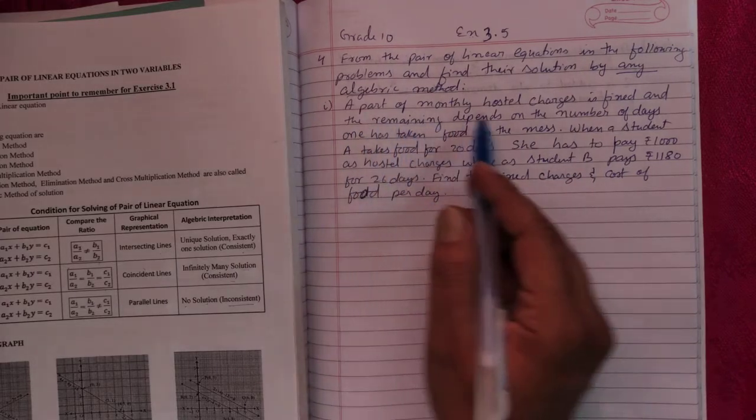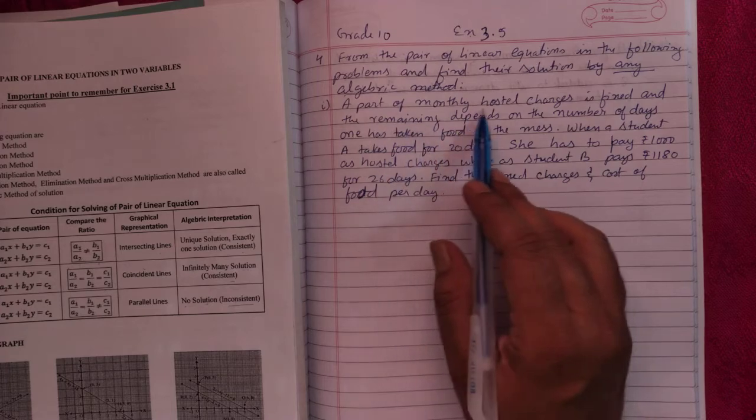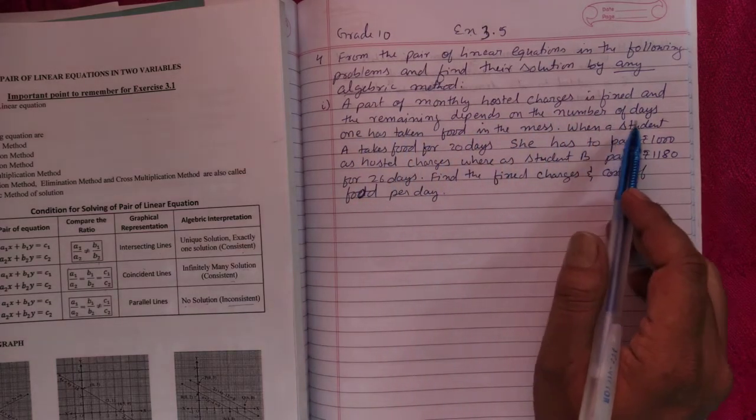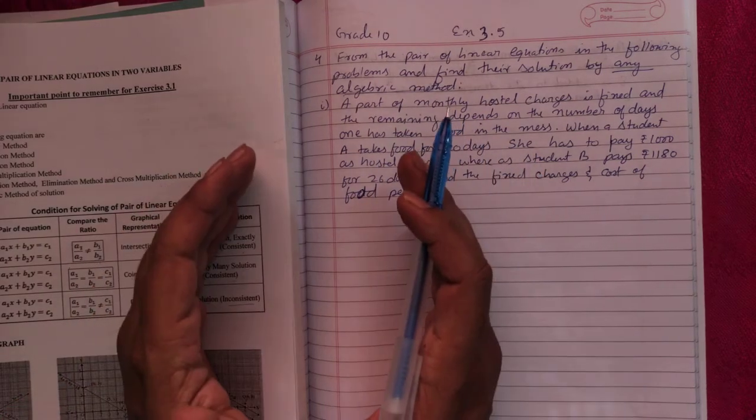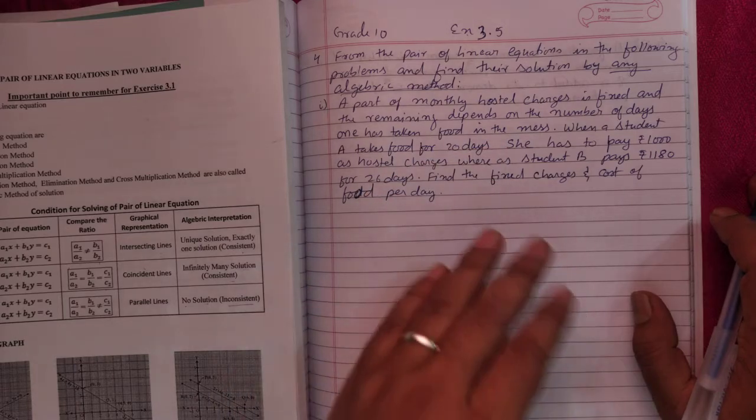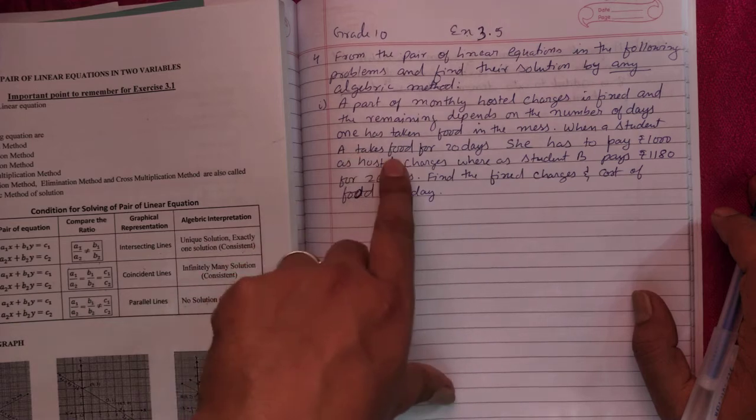A part of monthly hostel charges is fixed and the remaining depends on the number of days. This means there is a fixed hostel charge and the remaining depends on the number of days you are eating food in the mess.